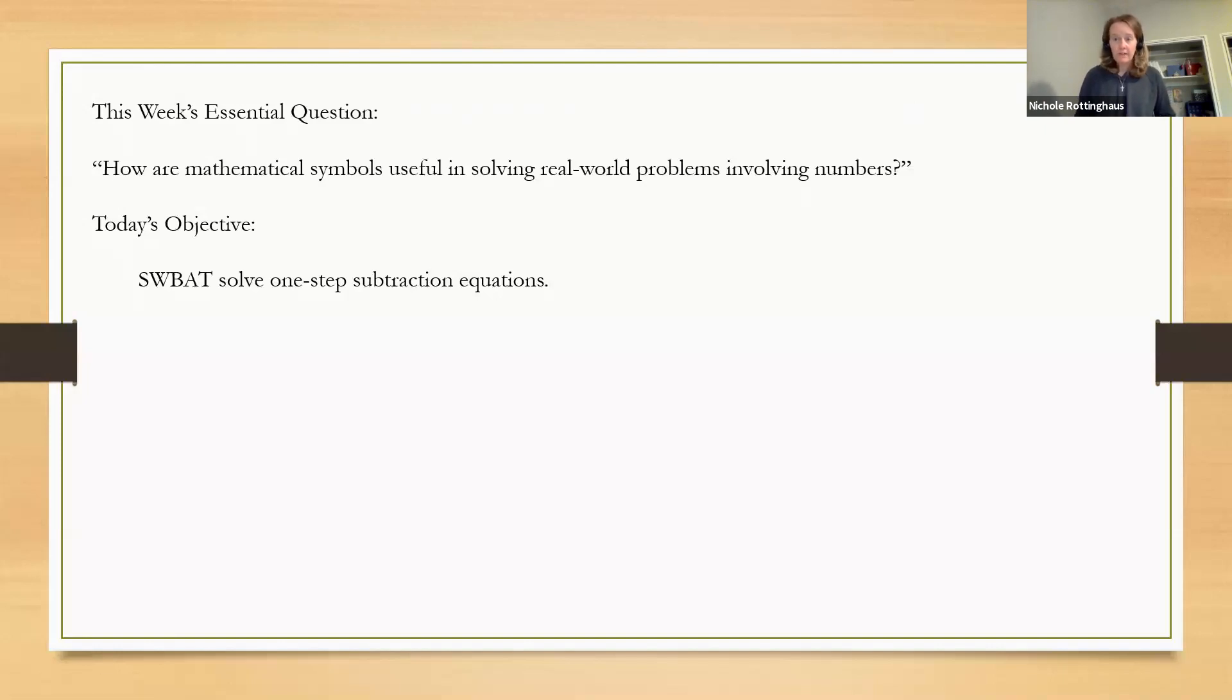All right. So just as a reminder, in your math notebook, you should add today's objective. Write down today's objective. Our essential question is the same. You don't have to write that one again. We are just continuing to look at how we use mathematical symbols to solve real-world problems involving numbers. This whole unit is about understanding how we translate between English and math and how we use those math symbols and the way we write math to help us solve those problems. Today, we're moving on to something new. So last week, we solved one-step addition equations at the end of the week. And today, we're going to solve one-step subtraction equations.